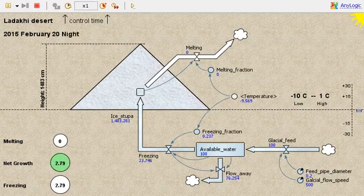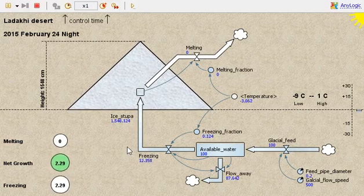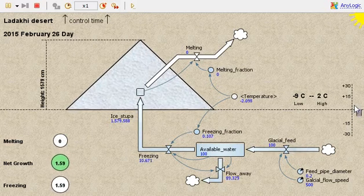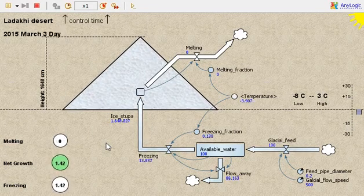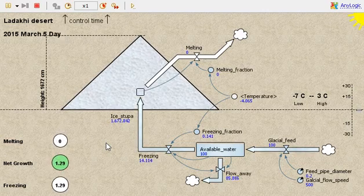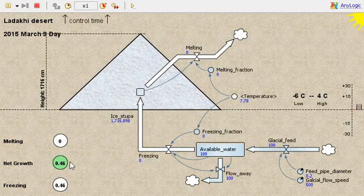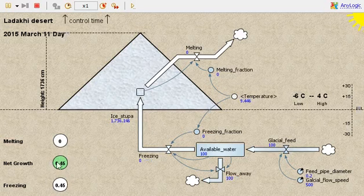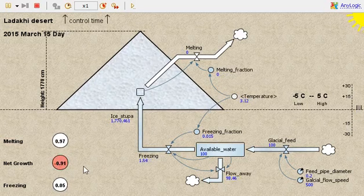Now starting with March, the daytime temperatures will often go above zero, even towards the end of February. So we will start seeing a melting process. Initially the melting only appears during the day. You see when the net growth is negative, that means glacier shrinkage. It's essentially melting.